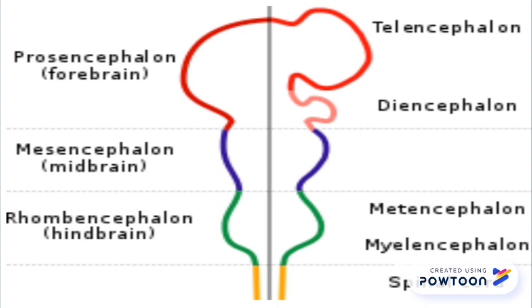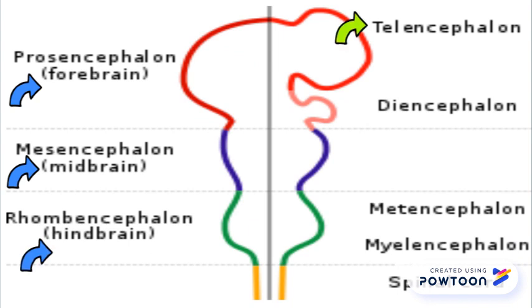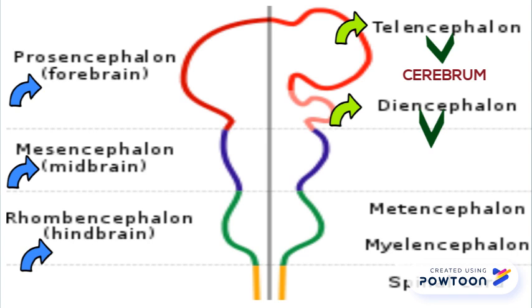During embryogenesis, the prosencephalon forms the forebrain, the mesencephalon forms the midbrain, and the rhombencephalon forms the hindbrain. The prosencephalon is further divided into the telencephalon and the diencephalon. The telencephalon forms the cerebrum, and the diencephalon forms the thalamus, hypothalamus, and optic vesicle.